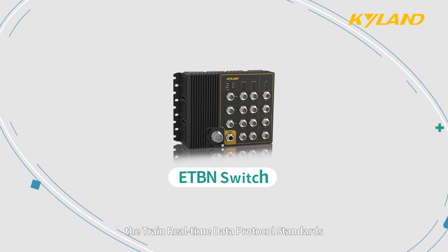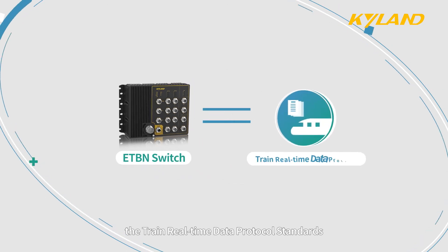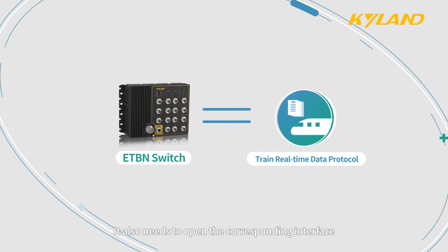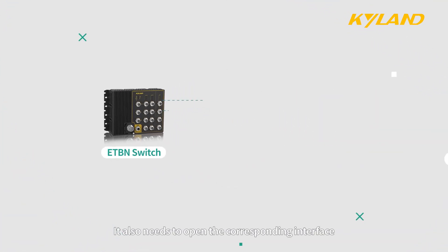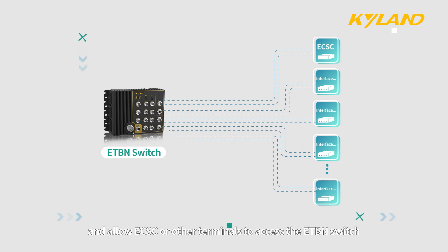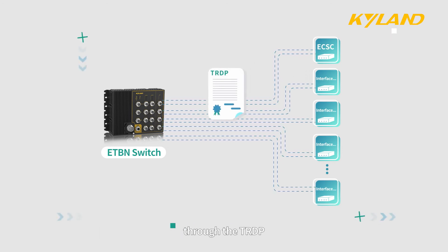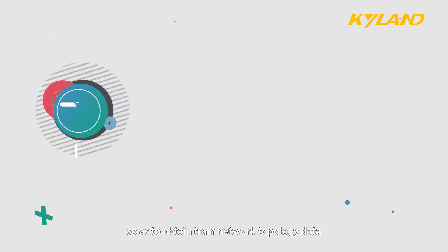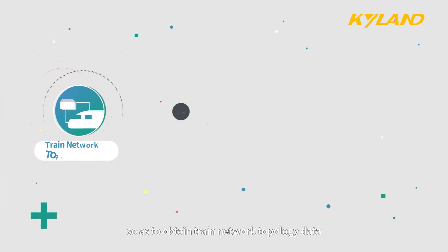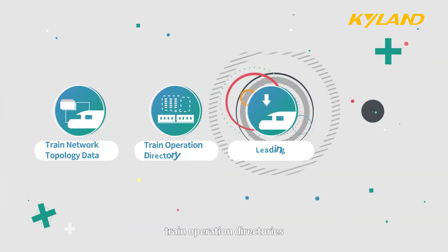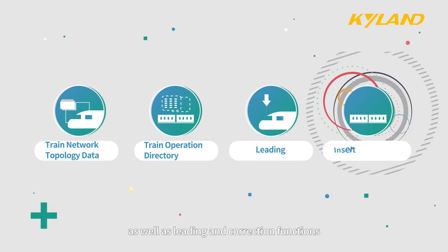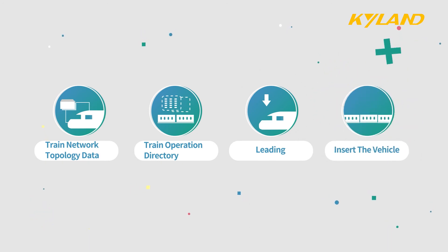The ETBN switch needs to comply with the Train Real-Time Data Protocol standards. It also needs to open the corresponding interface and allow ECSC or other terminals to access the ETBN switch through the TRTP and the designated port, so as to obtain train network topology data, train operation directories, as well as leading and correction functions.